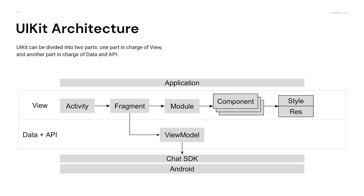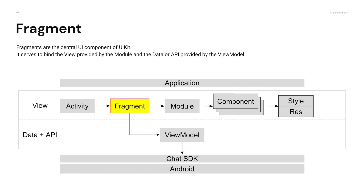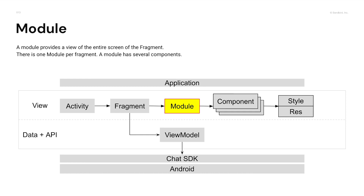Let's dig deeper into the relationship between UIKit version 3 components. UIKit can be divided into two parts: one part is in charge of View, and another part is in charge of Data and API. Fragments are the central UI components of UIKit. By creating a module and a ViewModel, it serves to bind the view provided by the module and the data or API provided by the ViewModel. A module provides a view of the entire screen of the fragment, and there is one module per fragment.